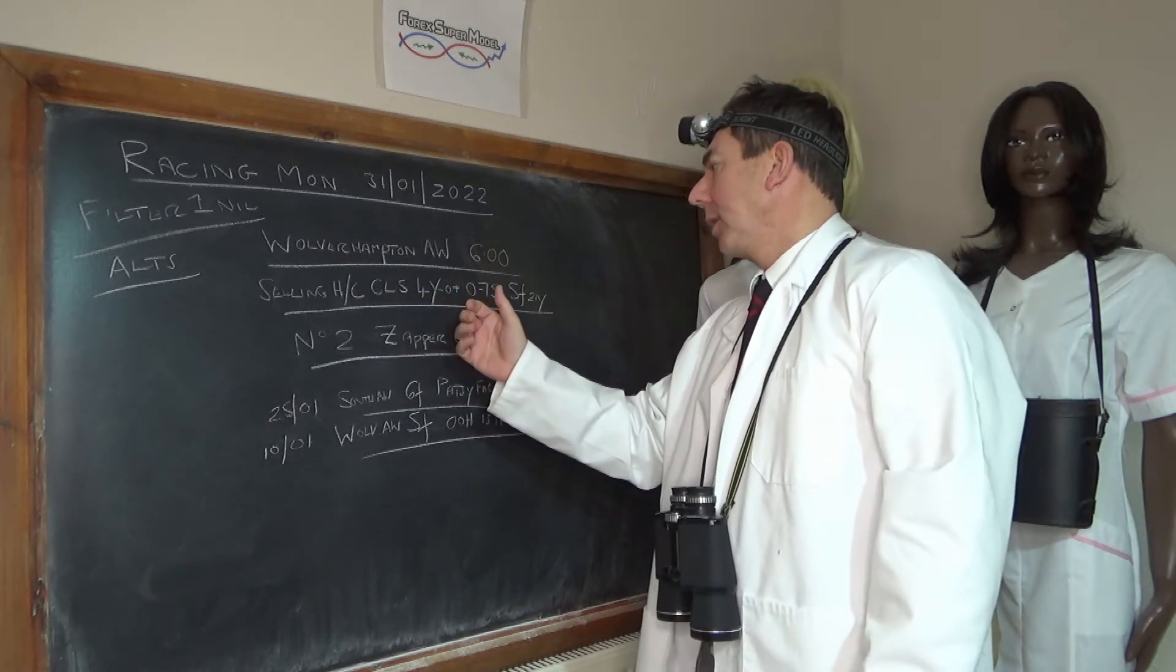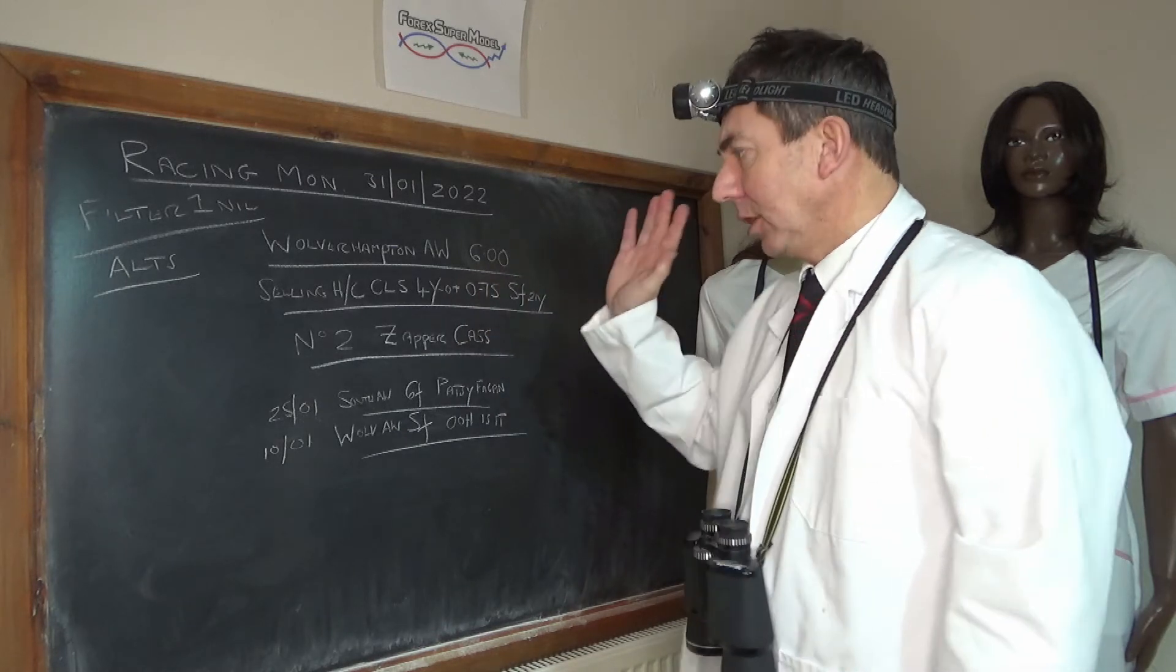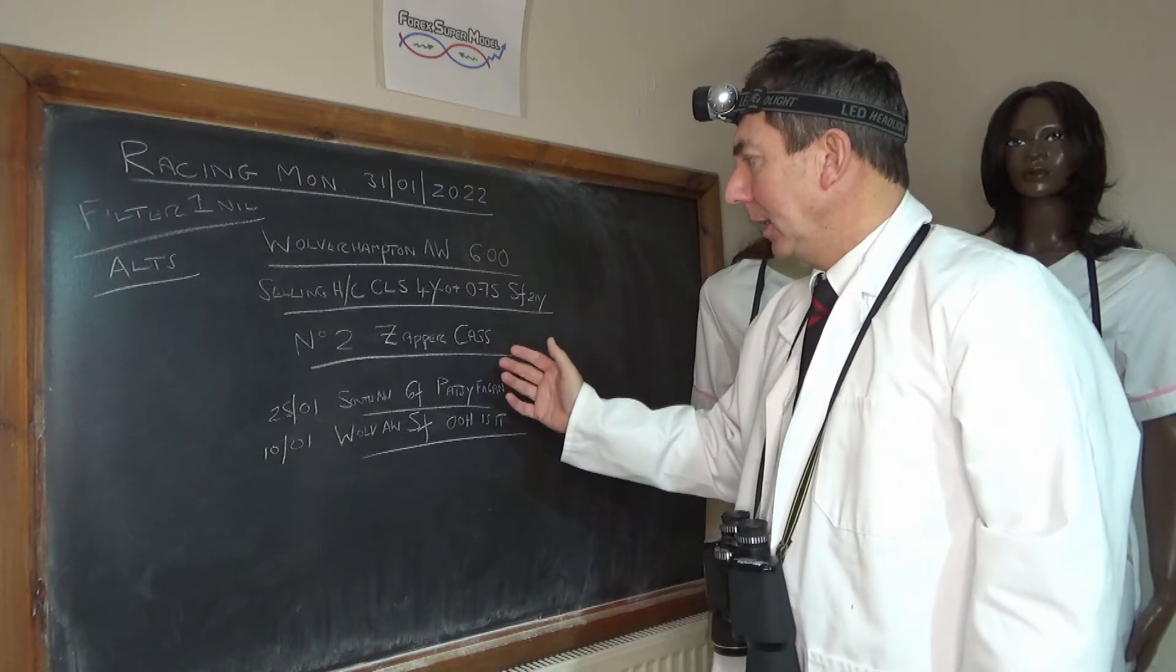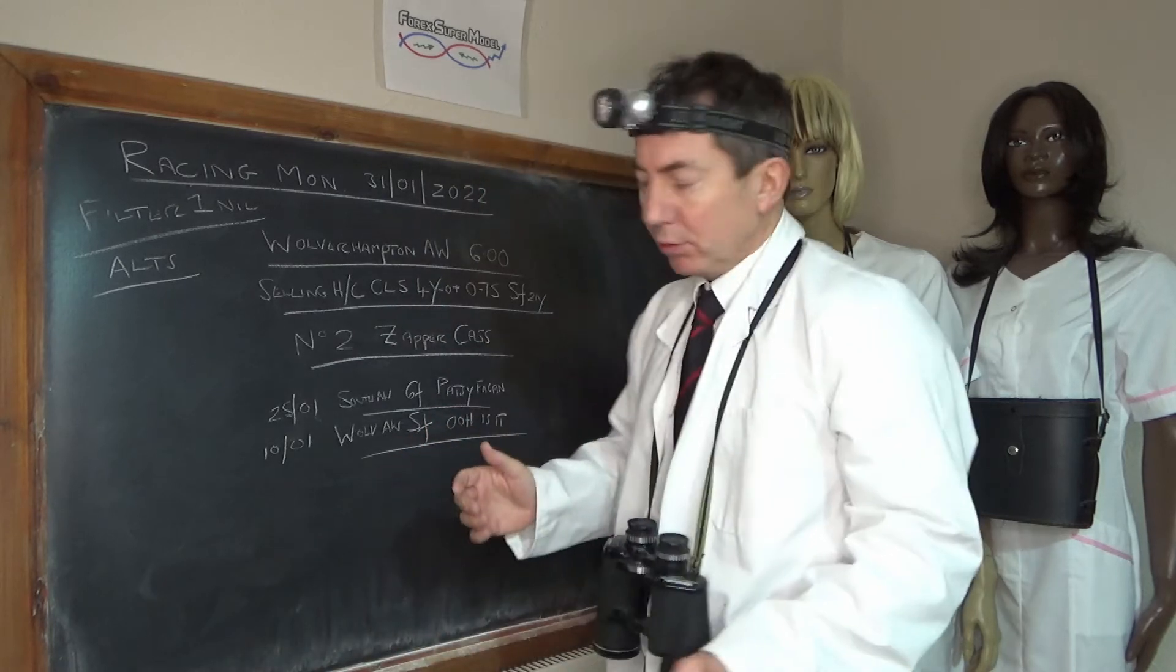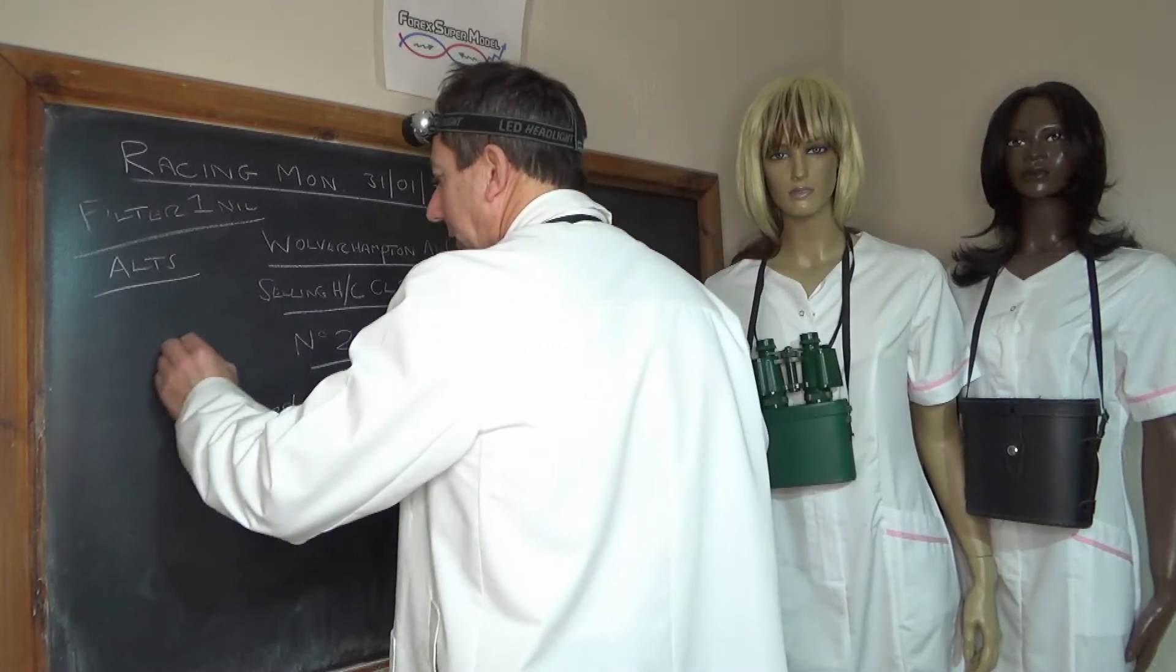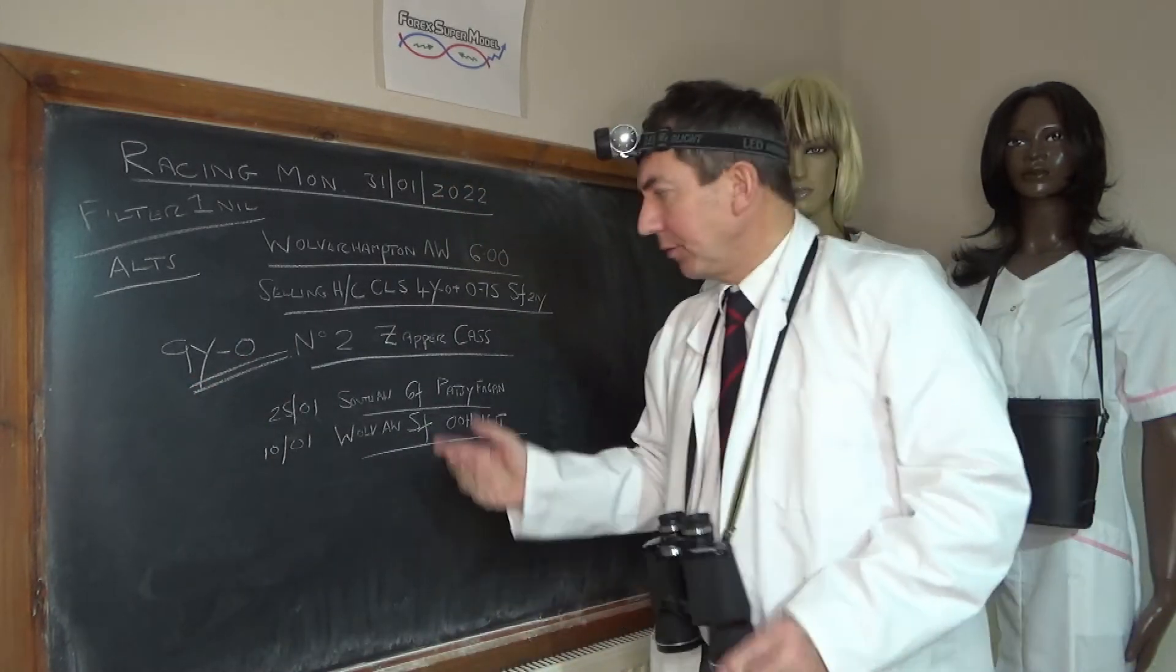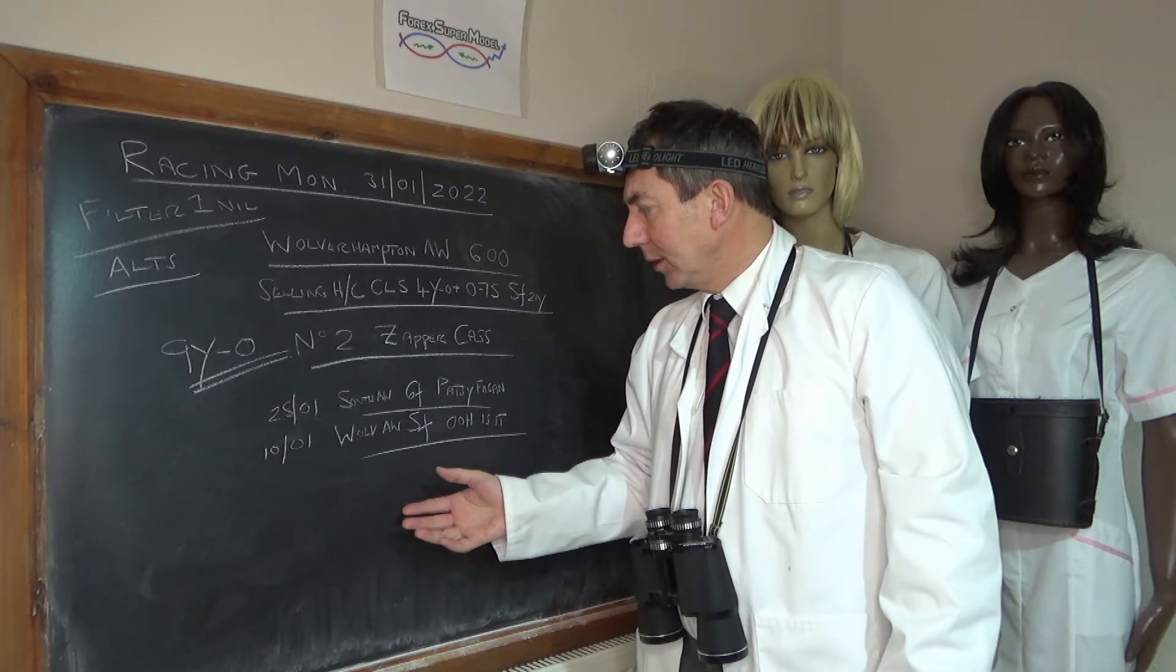It's a selling handicap class five, four-year-old plus, 5 furlongs 21 yards. We're looking at number two Zappa Cass, a nine-year-old which is getting on a bit, but this is a sprint.